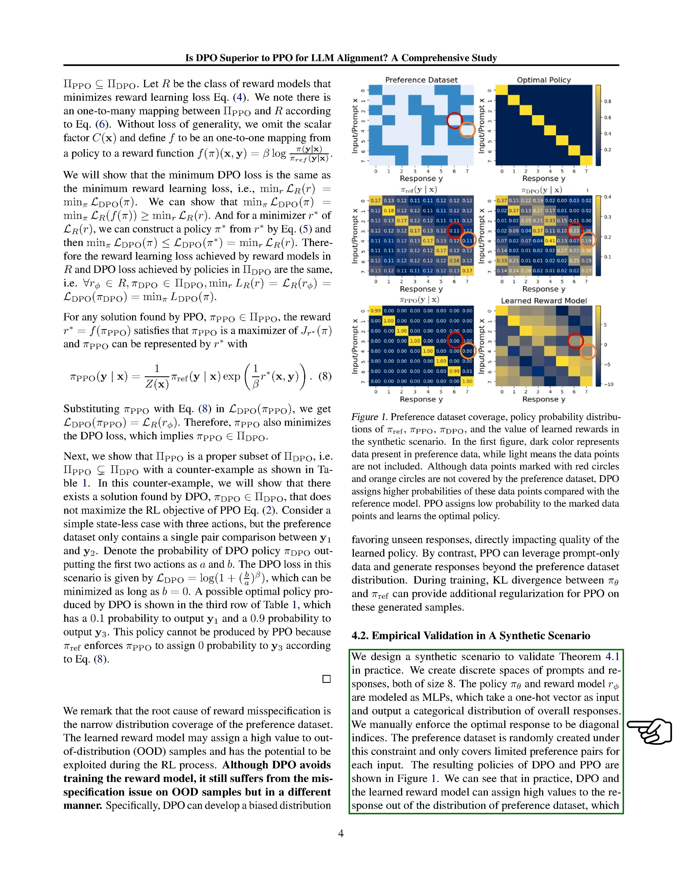We ensured that the optimal response was at diagonal indices. The preference dataset was randomly generated under this constraint, covering limited preference pairs for each input. The resulting policies of deterministic policy optimization, DPO,